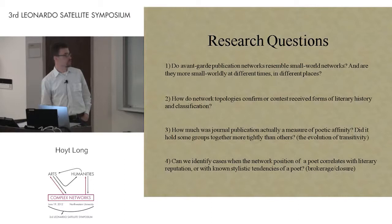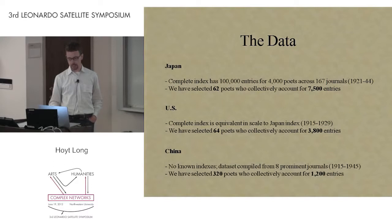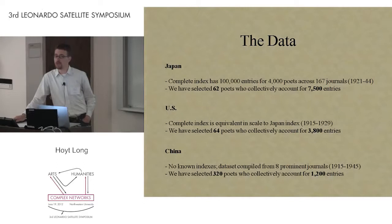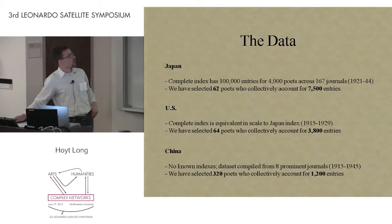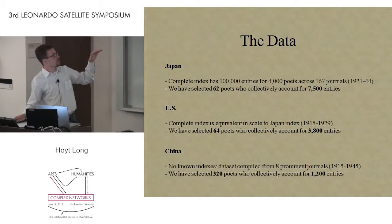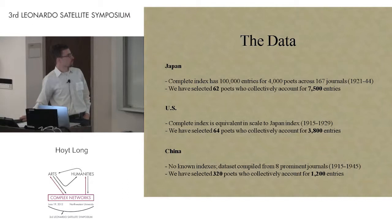Just to give you a sense of the data: it's fairly small scale. None of this is digitized, so we have to do this all by hand. For the Japan case, the index we're working with has about 100,000 entries, 4,000 poets, and 167 journals. We've selected a subset of that, same with the US case. China is a little bit more difficult, but I'm going to show you just one slide to give you a sense of what that network looked like.